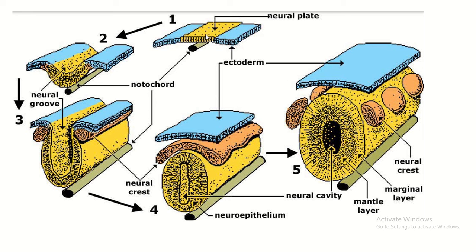A groove is developed within the neural plate, known as the neural groove. On two sides these are the neural folds. Tissue of the neural fold starts to detach from the rest of the neural plate and forms the neural crest.